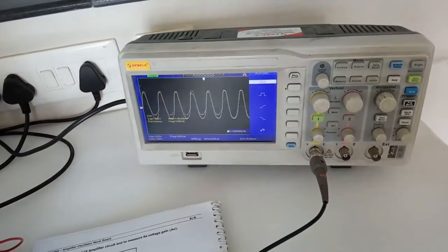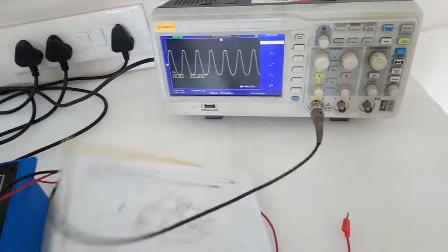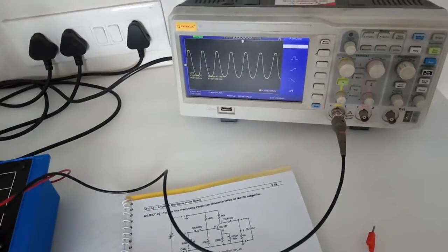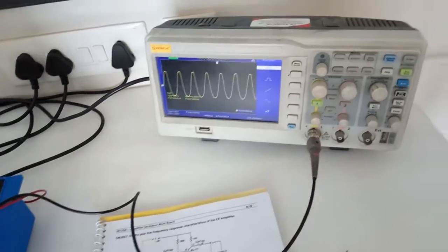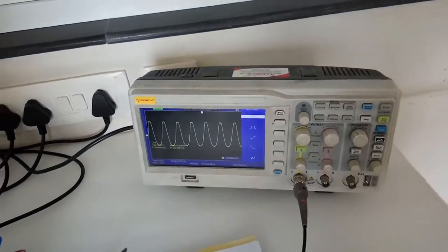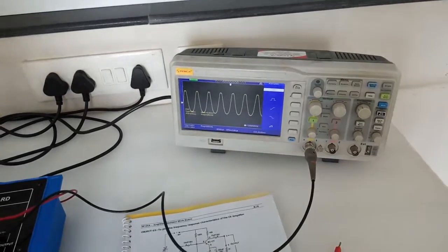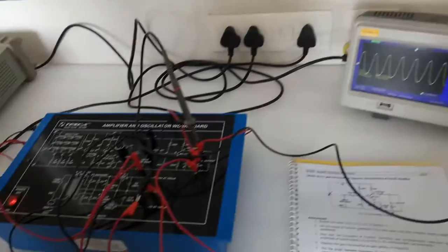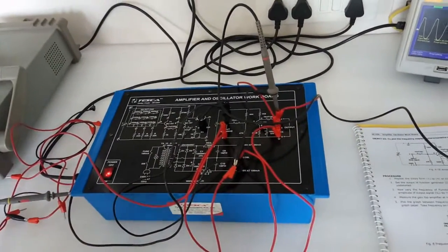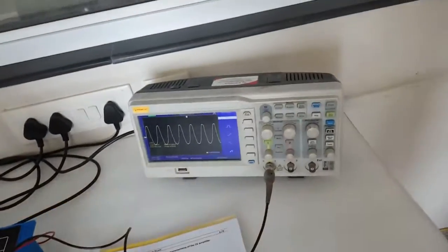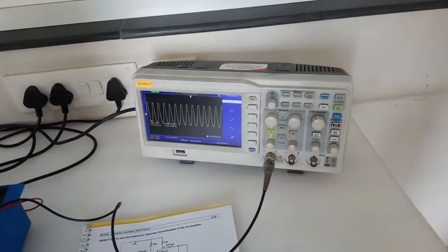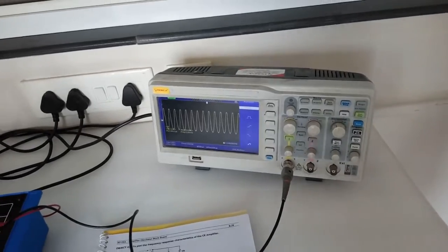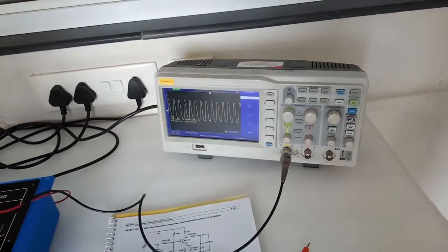Similarly, we can plot the frequency response characteristics of the CE amplifier. Here we need to vary the frequency of the function generator and observe the frequency on the CRO. From that, we can calculate the frequency response characteristics as shown in the manual.